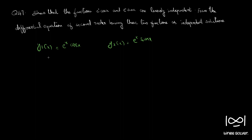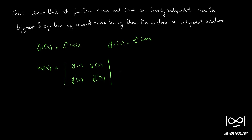In order to show that these two functions are linearly independent, we take the Wronskian. The Wronskian W(x) is defined as the determinant of y₁(x), y₂(x), y₁'(x), y₂'(x). If the Wronskian is not equal to zero for a given interval, then the functions are linearly independent. So this becomes: e^x·cos(x), e^x·sin(x), and the derivative of e^x·cos(x) is e^x·(cos(x) − sin(x)).